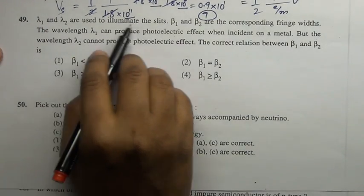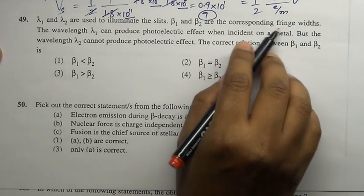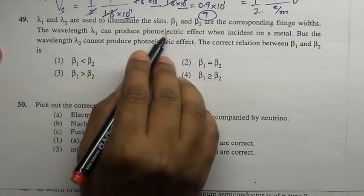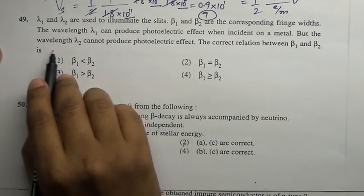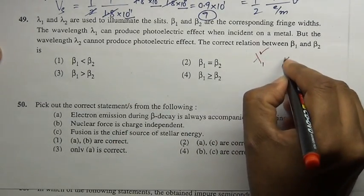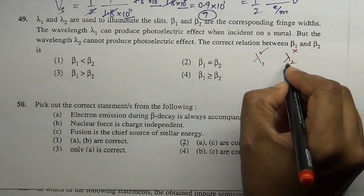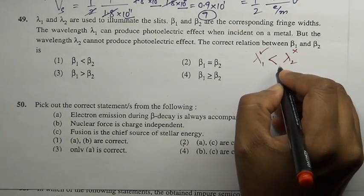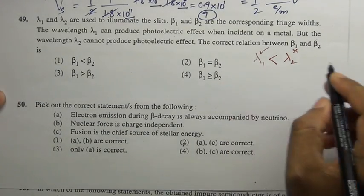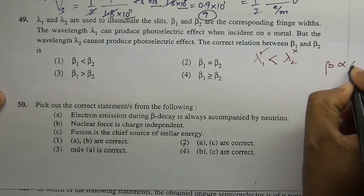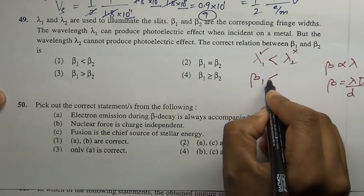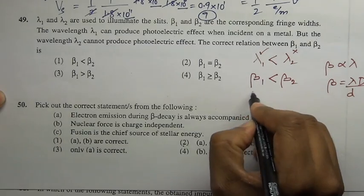Question 49: Lambda₁ and lambda₂ are used to illuminate slits; beta₁ and beta₂ are the corresponding fringe widths. Wavelength lambda₁ can produce the photoelectric effect but lambda₂ cannot. This means lambda₂ is greater than lambda₁. Since fringe width beta equals lambda D/d, it is proportional to lambda, therefore beta₂ is greater than beta₁.